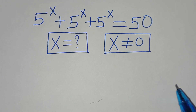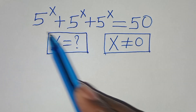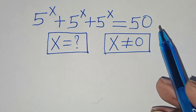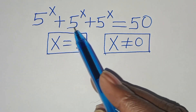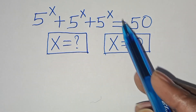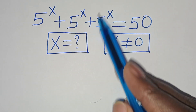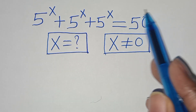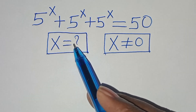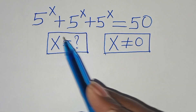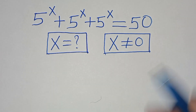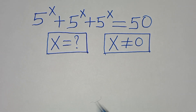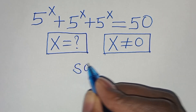Hello everyone, you're welcome to solve this nice exponential equation, which is 5 to the power of x, plus 5 to the power of x, plus 5 to the power of x, this is equal to 50. What is the value of x, given that x is not equal to 0? So let's present a solution from here.